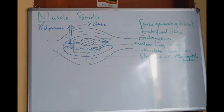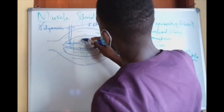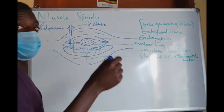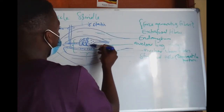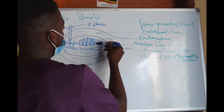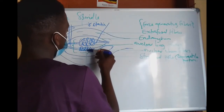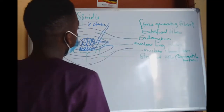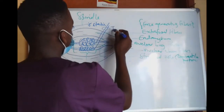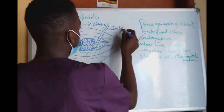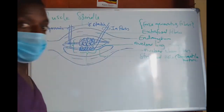Another set of nerve fibres is called the Group 1A fibres. These are sensory and they form annulospiral endings. They supply both nuclear bag and nuclear chain, forming the annulospiral arrangement around the bag and chain. These are sensory and are classified as Group 1A, also called primary fibres.